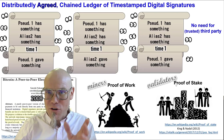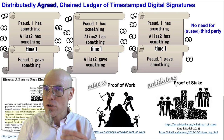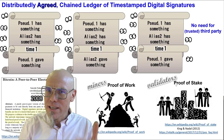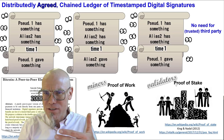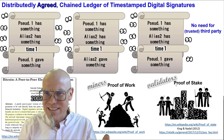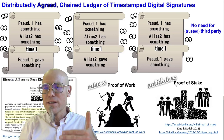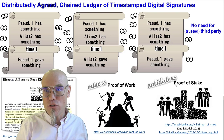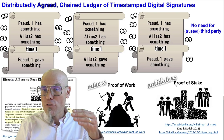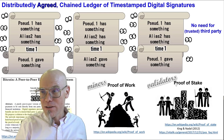So if you hear terms like Bitcoin mining, proof of work, proof of stake, validators, staking, and so forth, this all has to do with how we put ourselves into agreement on what is the next block that we write onto the blockchain.